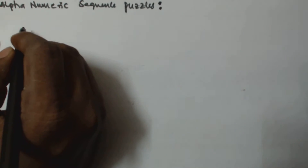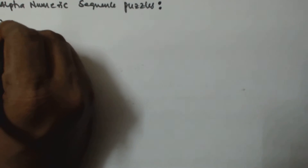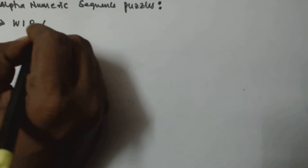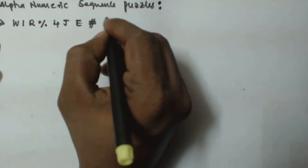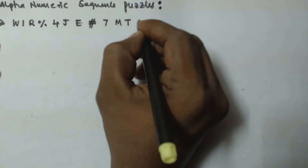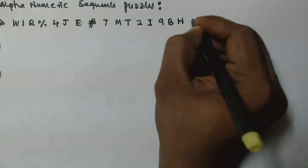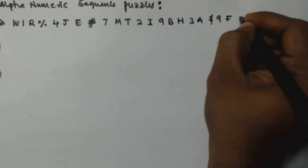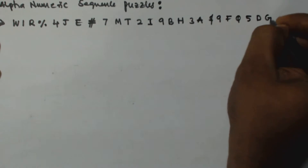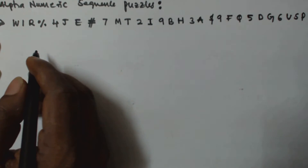Hello friends. In this video we will see another alphanumeric sequence puzzle. Let us assume the given alphanumeric sequence is: W 1 R % 4 J E @ 7 M T 2 I 9 B H 3 A $ 9 F Q φ D G 6 U S P. So these are the alphanumeric sequence elements given.